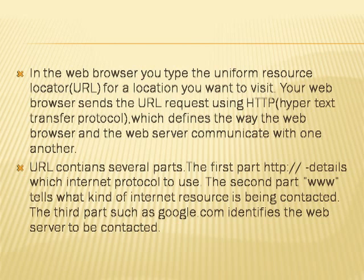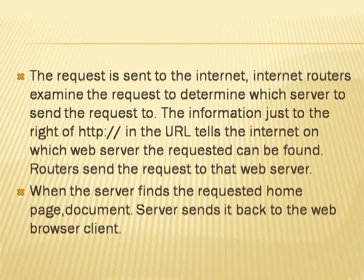URL contains several parts. The first part — http:// — details which internet protocol to use. The second part — www — tells what kind of internet resource is being contacted. The third part, such as google.com, identifies the web server to be contacted. The request is sent to the internet, and internet routers examine the request to determine which server to send it to.